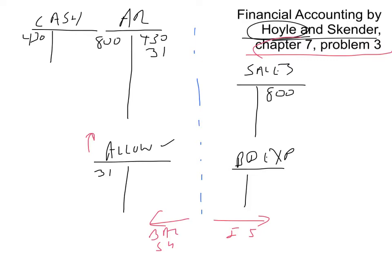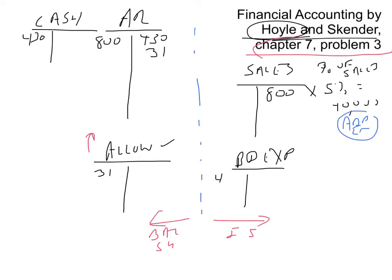At the end of the year, and only at that point, do you need to know the method being used. They're using the percentage of sales method, which means we take a percentage — based on past experience, here it's 5% — and multiply that times the sales figure, giving us $40,000. I call this the add-in method: once you compute that $40,000, you add it into bad debt expense and add the same $40,000 into the allowance for doubtful accounts, and year one is finished.